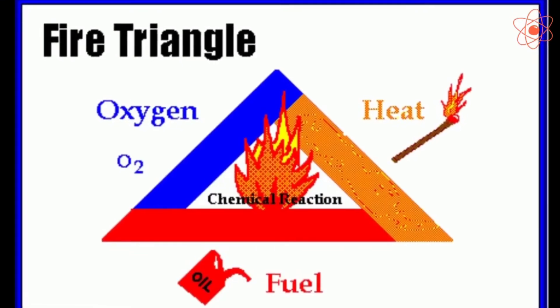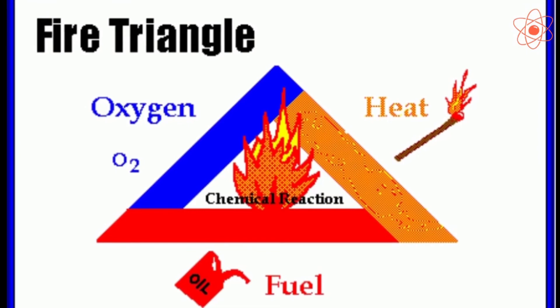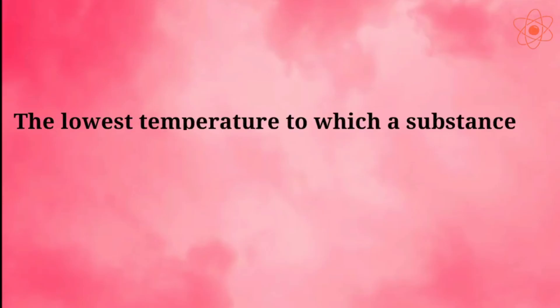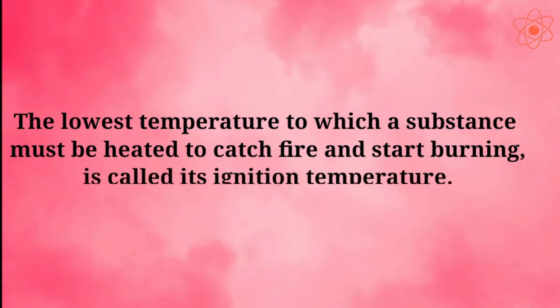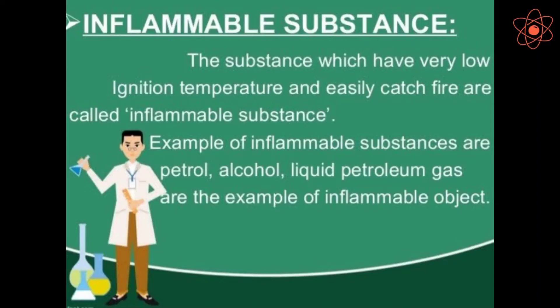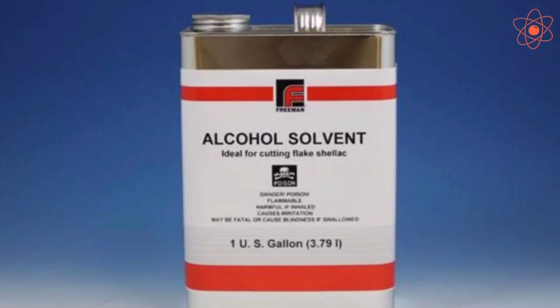All these three conditions are also called the Triangle of Fire. The lowest temperature to which a substance must be heated to catch fire and start burning is called its ignition temperature. The substances that have very low ignition temperature and can easily catch fire with a flame are called inflammable substances. LPG, kerosene, and alcohol all have low ignition temperatures.